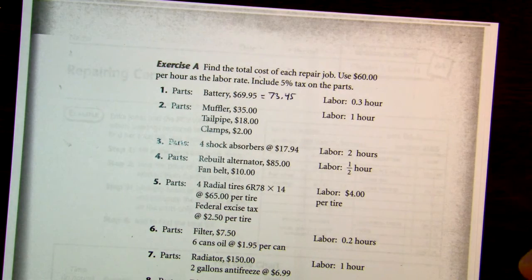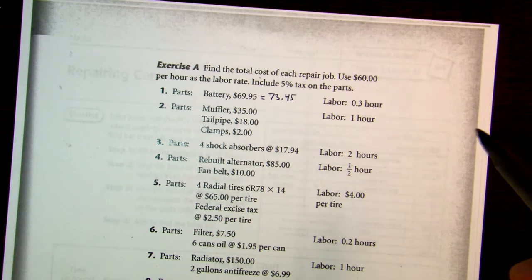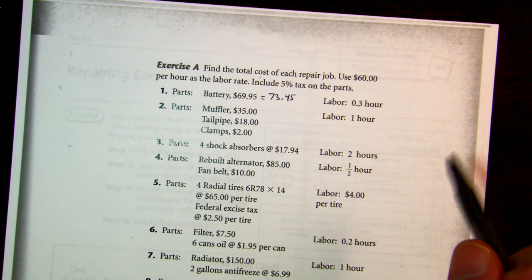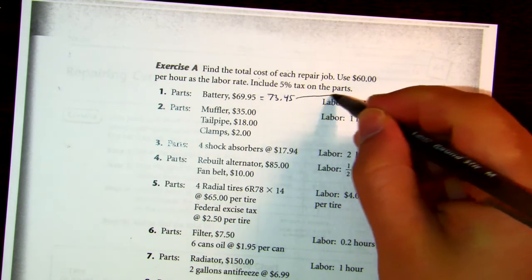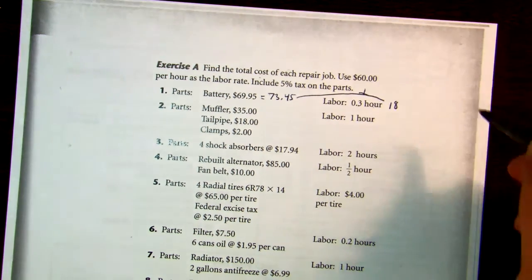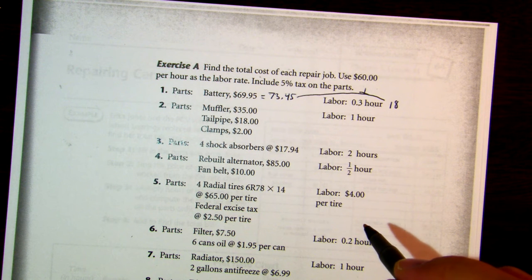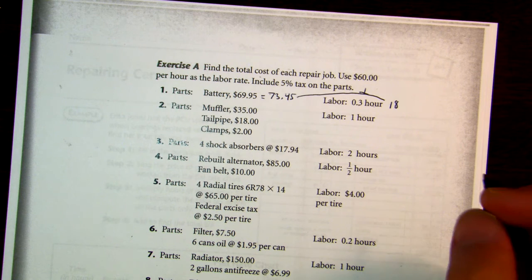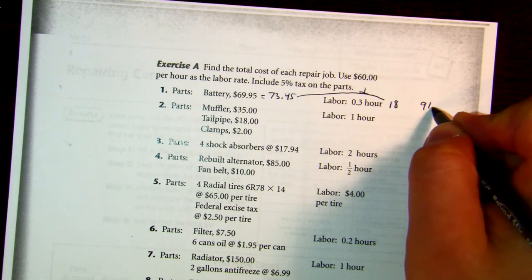The labor to put in a battery is 0.3 of an hour. So you're going to multiply 0.3 times 60 — that's $18 for the labor. Add that to $73.45 and your total cost is $91.45.